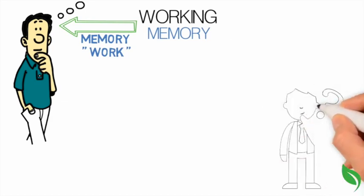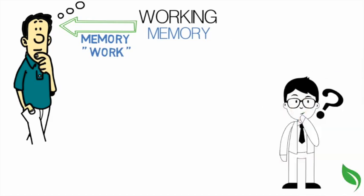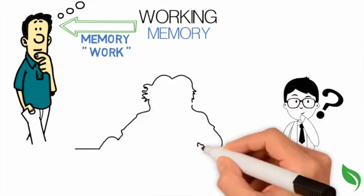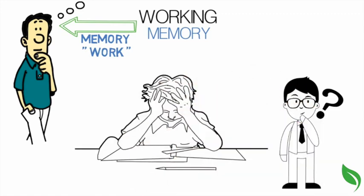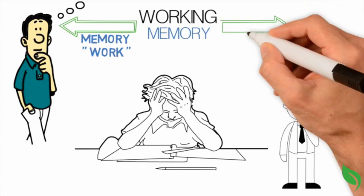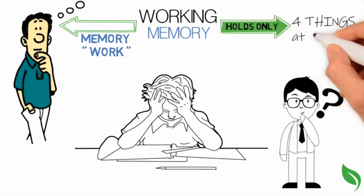People can only handle a small amount of information in their working memory at one time. We cannot think about a million things at once. In fact, we can only hold about four things in our working memory at a time.